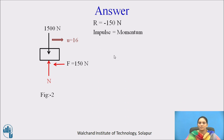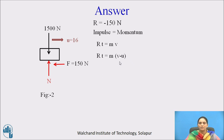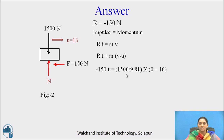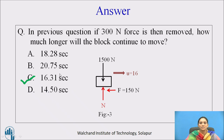Applying the impulse-momentum method: impulse equals resultant force times time, and momentum is product of mass and velocity, taken as final momentum minus initial momentum. Substituting: R = −150 N, M = 1500/9.81 kg, final velocity = 0, initial velocity = 16 m/s. Calculating t, we get t = 16.31 seconds. So the correct answer is 16.31 seconds.